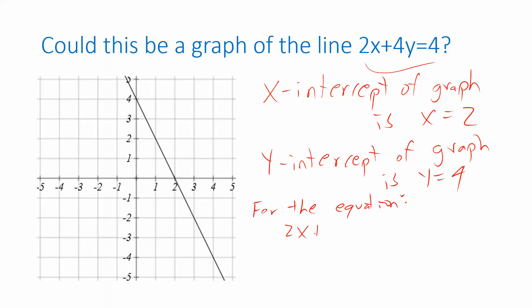2x plus 4 times 0 equals 4. So if you solve that, you get 2x equals 4, which tells you x is 2. Well, that's right. That's the value we want for the x-intercept.